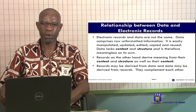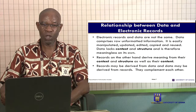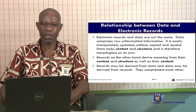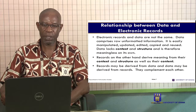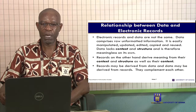The relationship between data and electronic records — electronic records and data are not the same. Data refers to raw, unformatted information. It's easily manipulated, updated, edited, copied and reused. Data lacks context and structure and is therefore meaningless on its own. Records derive meaning from their context, structure, as well as their content. Context has to do with the environment within which they were created. A record may be derived from data and data may be derived from records — they complement each other.